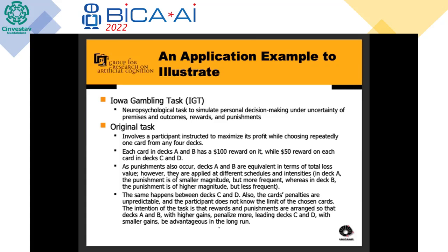Each card in decks A and B has a $100 reward, while each card in decks C and D has a $50 reward. Punishment also occurs. Decks A and B are equivalent in total loss value, but applied at different schedules and intensities. In deck A, punishment is of smaller magnitude but more frequent; in deck B, it is of higher magnitude but less frequent. The same relationship holds between decks C and D.